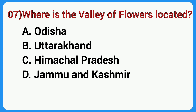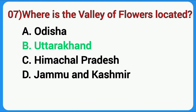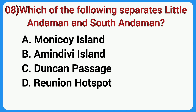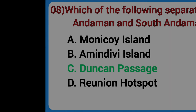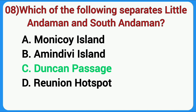Where is the Valley of Flowers located? Answer is Uttarakhand. Which of the following separates Little Andaman and South Andaman? Answer is Duncan Passage.